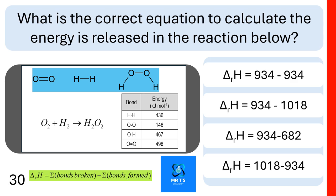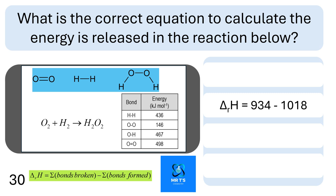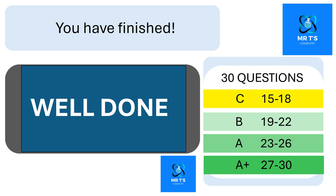Question thirty: what is the correct equation to calculate the energy released in the reaction? Is it ΔHr = 934 − 934, ΔHr = 934 − 1018, ΔHr = 934 − 682, or ΔHr = 1018 − 934? Well done if you got it correct. The answer is bonds broken — which we worked out in the previous question — minus bonds formed, which is 1018.